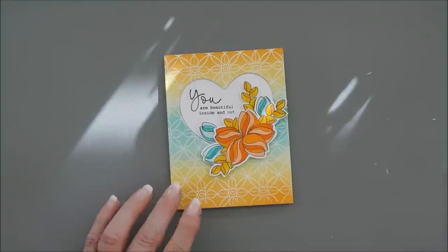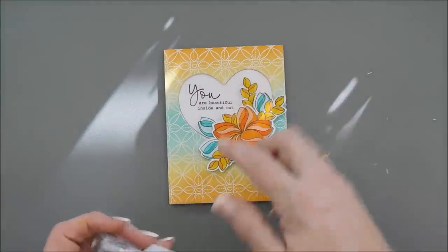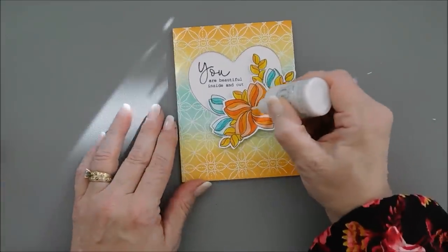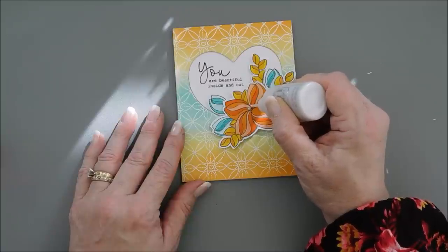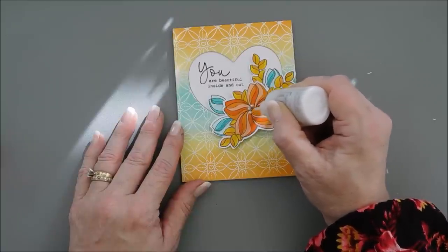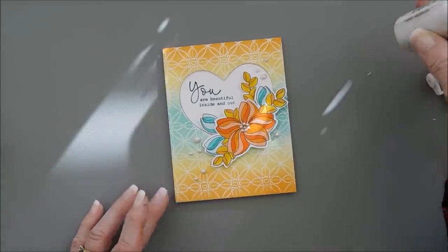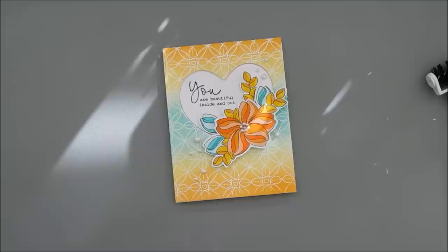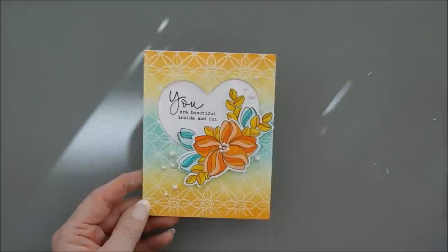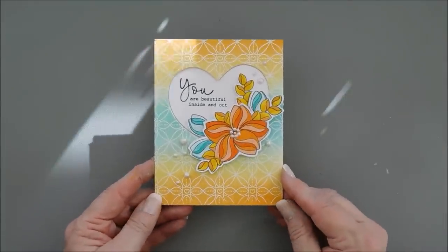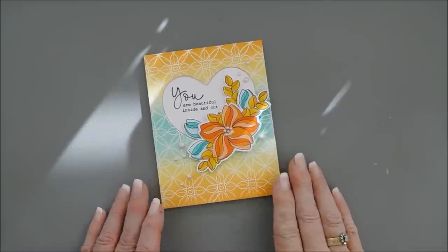And then lastly, I'm going to add some Nouveau Crystal Drops to the center of my flower here, and then also a few around. I'm going to just add maybe five. It'll be a good number. And then that will finish off my card today, using a few new items from the Simon's Kisses release. I hope you enjoyed my project. I thank you so much for joining me. I wish you a lovely day. Thank you so much.